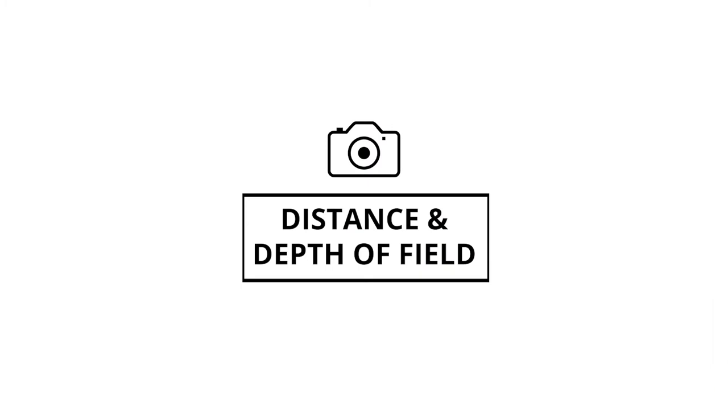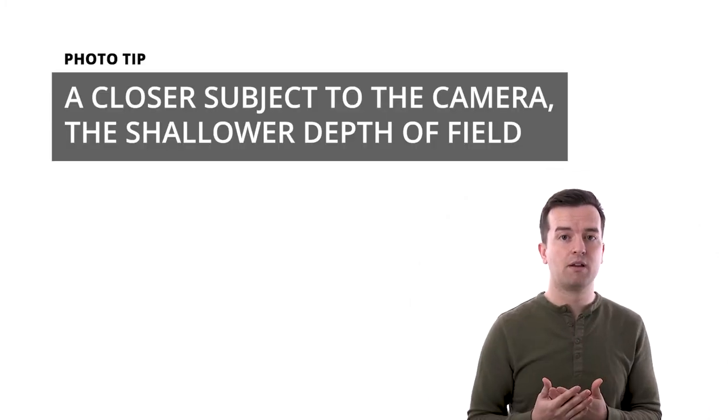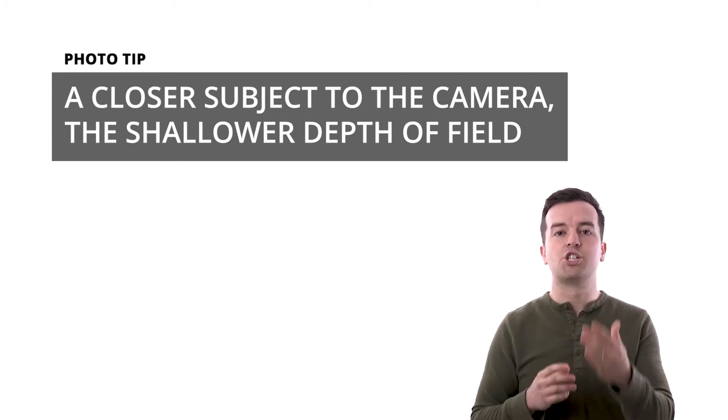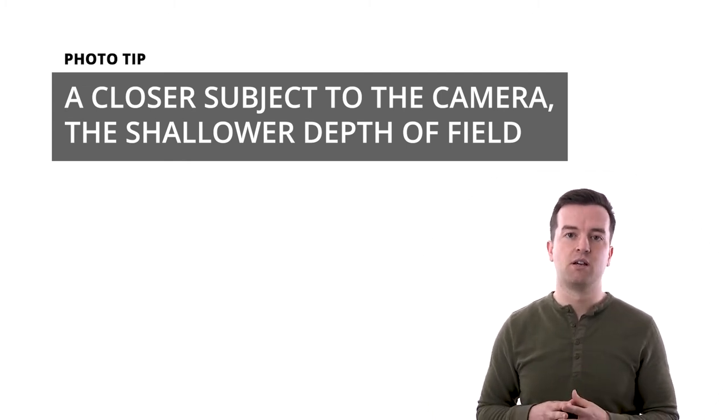A smaller aperture — a larger f-stop — has a deeper depth of field. It may be easier to remember this by knowing that a smaller f-stop means less depth, and a larger f-stop means more depth. Next, with distance, the closer your subject is to the camera and the further it is from the background, the shallower the depth of field is.